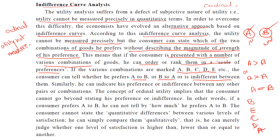The concept of ordinal utility implies that the consumer cannot go beyond stating his preference or indifference. That is, if a consumer prefers A to B, he cannot tell how much he prefers — he simply prefers A to B, and no quantification is needed. The consumer cannot state the quantitative difference between the various levels of satisfaction; he simply compares qualitatively — whether one level of satisfaction is higher than, lower than, or equal to another. That is the basic principle of ordinal utility analysis.